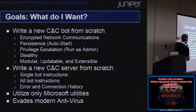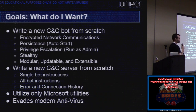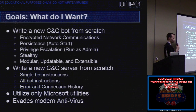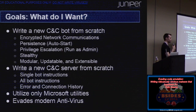The goals for the CNC bot were: encrypted network communication, so the IT guy watching traffic can't figure out it's malware or write a signature matching the packets. We want it to persist — auto-start with the machine, never go away. We want privilege escalation: we'll install as a user account and get up to an administrator account so instructions launch as an administrator. We want it to be stealthy so the user doesn't know it's there. And we want to be able to update and extend it without releasing new copies of the malware.